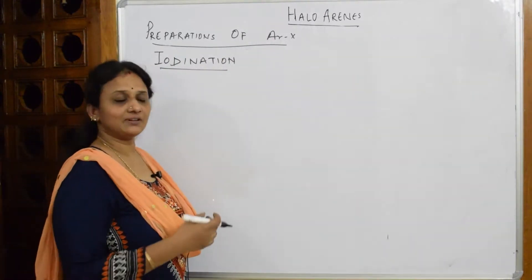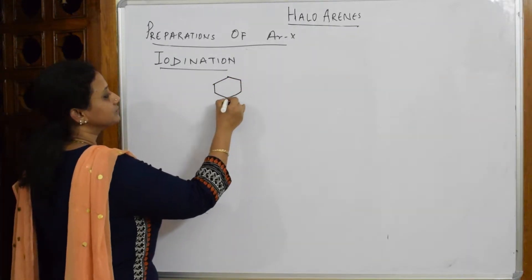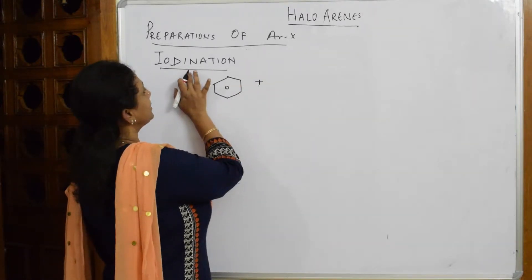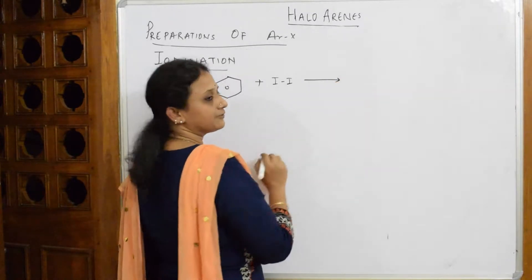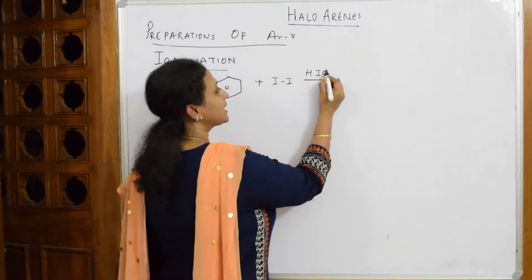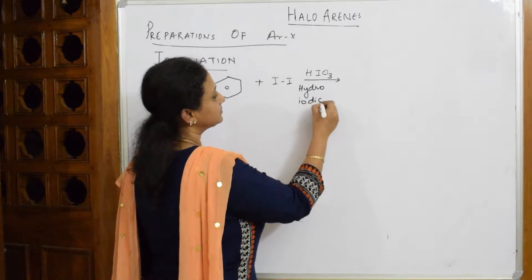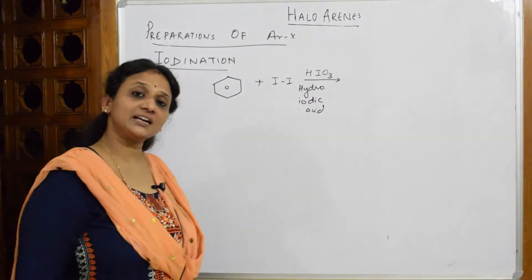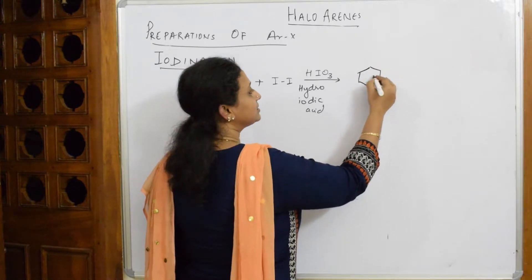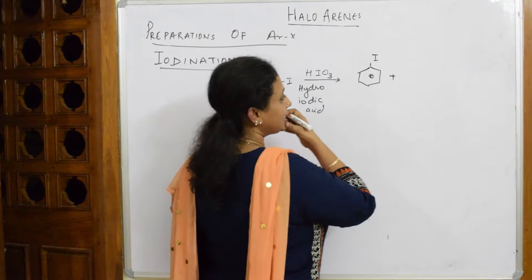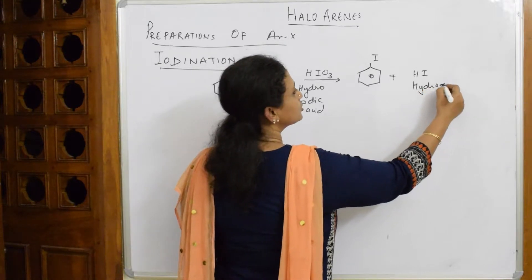Iodobenzene cannot be prepared directly. Let us see why. When I perform the iodination reaction, I take a benzene ring and add I₂. But careful — this whole reaction is carried out in the presence of HIO₃ (iodic acid). When HIO₃ is added, the products obtained are iodobenzene and HI (hydrogen iodide) as a byproduct.